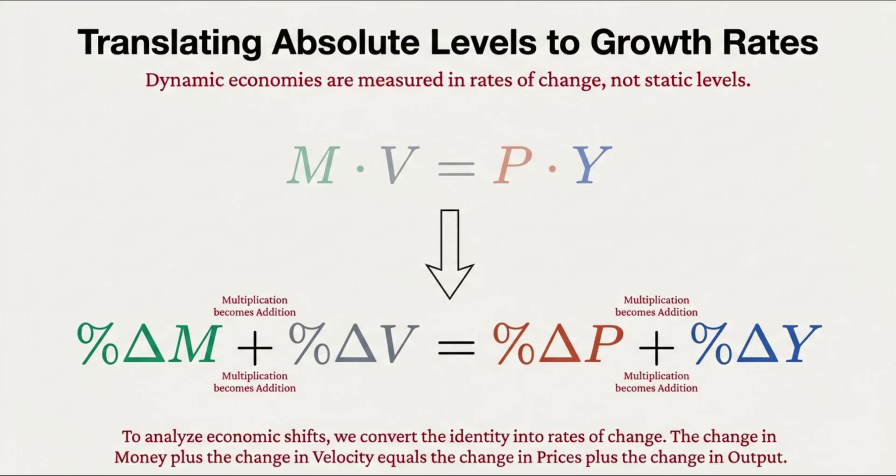Think of it like a hot potato. If I use a $10 bill to buy a coffee, and the shop owner immediately uses that same bill to pay an electricity bill, and then the utility company uses it to buy new equipment — that one $10 bill just facilitated $30 of transactions. That's high velocity. But if you take that $10 and just stuff it under your mattress for a year, its velocity is basically zero. So if we multiply the total amount of money M by the speed it's spent, V, that gives us total spending — M times V — one side of our equation.